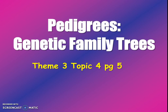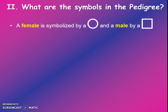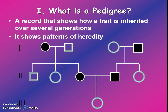Hello biology students, today we're going to be talking about pedigrees — genetic family trees. What is a pedigree? It is a record that shows how traits are inherited over several generations; it shows heredity. Sometimes it can help us show how a genetic disease moves through a family, and it helps us understand what type of inheritance that genetic disease might be.